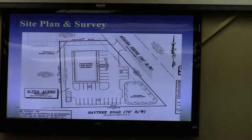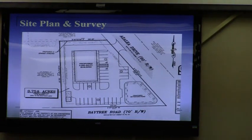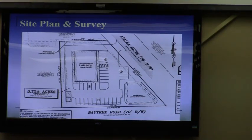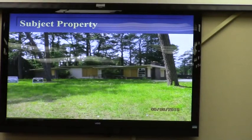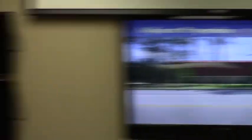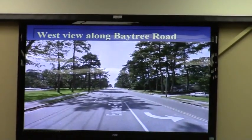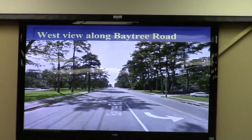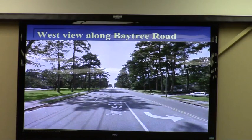The applicants do not have a specific use in mind. They are looking to market the property for uses allowed in CC zoning, which are fairly broad and varied. Here is the Nichols House with a few photos of it and some of the surroundings. This is the view down Bay Tree Road — it is very much not a commercial corridor. If you look at the zoning map in your packet, you will not find commercial zoning anywhere on it.